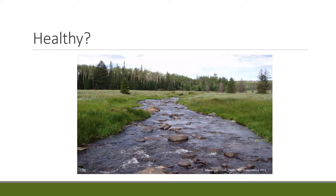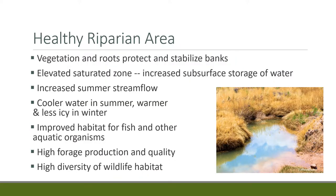We're going to look at what's healthy and what's not healthy in riparian systems, focusing mostly on lotic systems. A healthy riparian area has vegetation and roots that protect and stabilize the stream bank. Those vegetation attributes really do stabilize a stream bank.